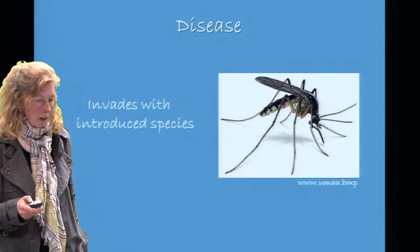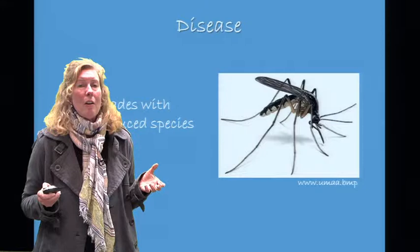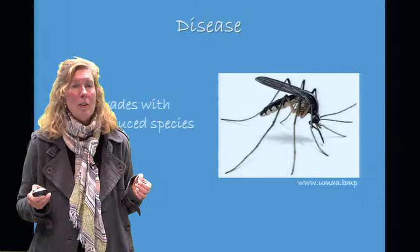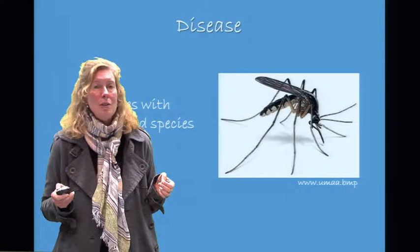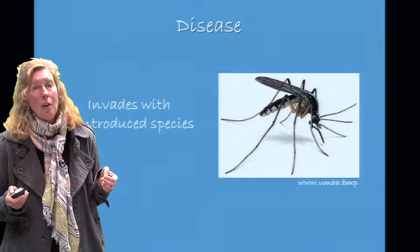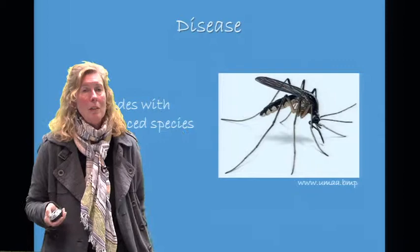Disease often piggybacks in with introduced species. For example, Hawaii used to be an even greater paradise. Mosquitoes are now in Hawaii and brought with them avian malaria. The native bird species did not co-evolve with the mosquito or avian malaria, so they have built up no immunity. Since the introduction of avian malaria, we have seen extinctions in native Hawaiian bird populations. Incidentally, with climate change, birds are running up the mountains in Hawaii, and mosquitoes are tracking them as well.